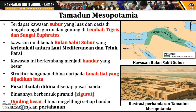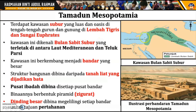Kemudian kita lihat tentang aktiviti pertanian dan aktiviti-aktiviti lain yang dilakukan oleh Tamadun Mesopotamia. Dari segi geografi, tamadun ini berkembang di sepanjang Sungai Tigris dengan Sungai Euphrates, dan sudah ada sistem pengairan. Terdapat kawasan yang subur yang luas di tengah-tengah gurun dan gunung, di lembah Tigris dan Sungai Euphrates. Kawasan subur ini kemudiannya kita kenali sebagai Bulan Sabit Subur, kerana ia terbentuk seperti bulan sabit, terletak di antara Laut Mediterranean dengan Teluk Parsi.